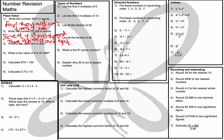Question number 3: what is the value of the number 4 in 642? Well, the value of 4 is actually 40. Because when I say the number it's 642 — so it's 6 hundreds, 4 tens which is 40, and 2 units. So the answer is 40.